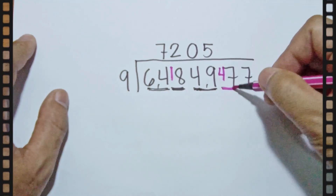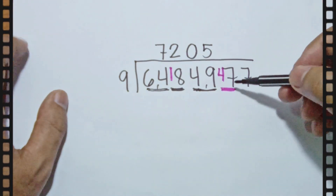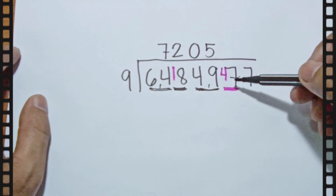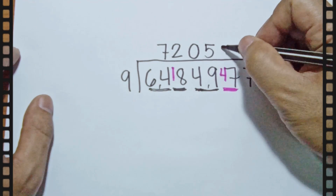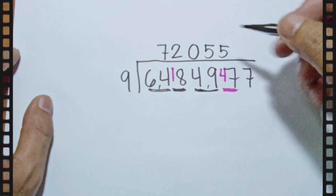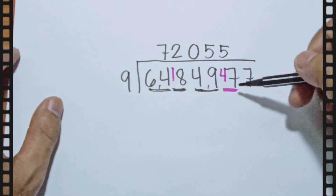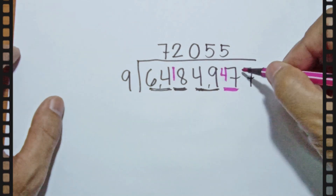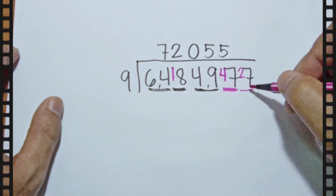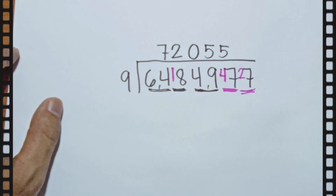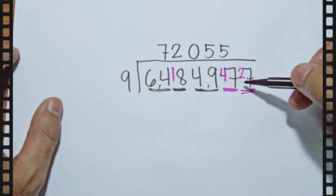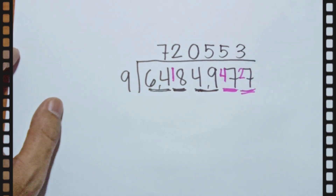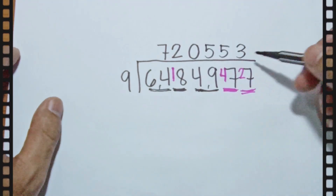So 7 will become 47. How many 9s can we make from 47? We can make 5, because 5 times 9 is 45, and 47 minus 45 is 2. We carry over 2, and 7 will become 27. How many 9s can you make from 27? We can make 3. 3 times 9 is 27, and 27 minus 27 is 0.